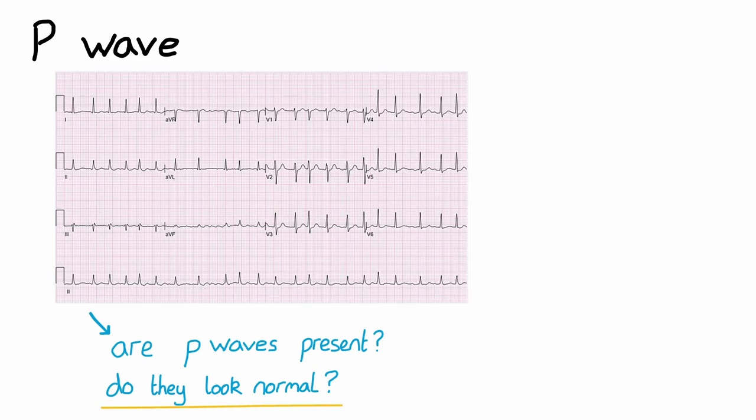Finally, morphology—that is, does it have a normal shape? We can see in this ECG there's a slurred upstroke at the start of the QRS complex. This is called a delta wave, and it's abnormal. You can see this in Wolff-Parkinson-White syndrome.